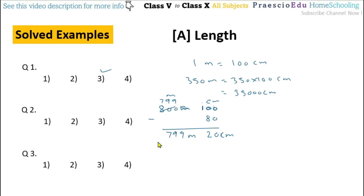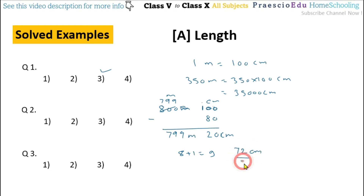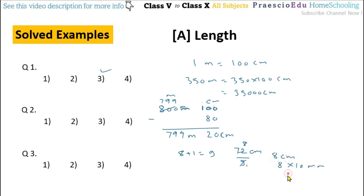Question number 3: A 72 centimeter long ribbon is cut equally at 8 places. Cutting at 8 places means 8 plus 1 equals 9 parts. What will be the length of each piece? So 72 centimeters divided by 9 equals 8 centimeters. But the option gives 80 mm. Since 1 centimeter equals 10 mm, 8 centimeter multiplied by 10 equals 80 mm, which is given in option number 2.